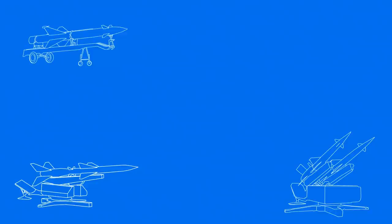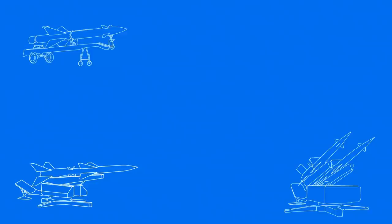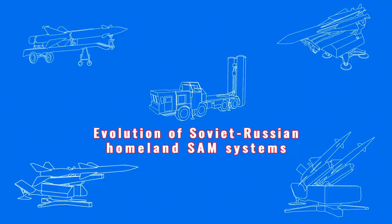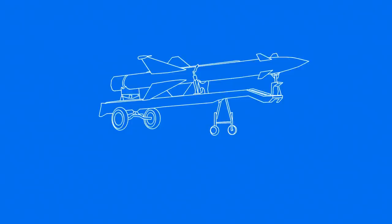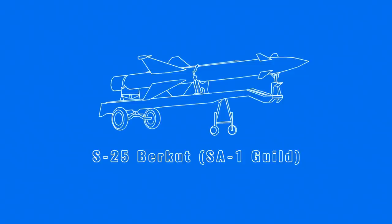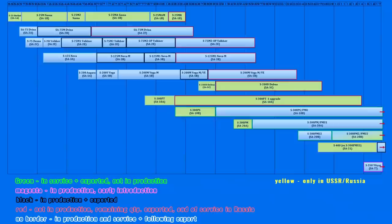The evolution of the Soviet-Russian surface-to-air missile systems from their beginnings until this day is a huge and complex topic. The goal of this video is to explain the airborne threats and the missile systems which were initially developed against them. The diagram summarizes the history of the Soviet-Russian homeland surface-to-air missile systems, from their introduction to the end of manufacturing, export and service.